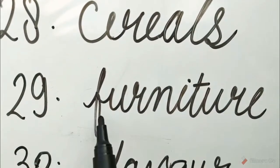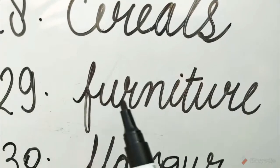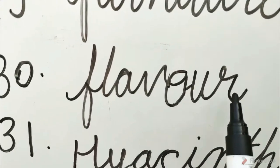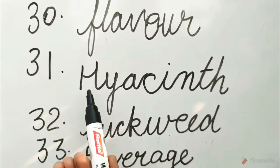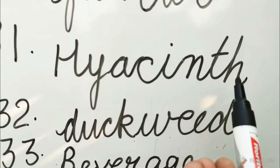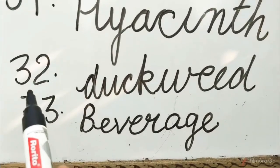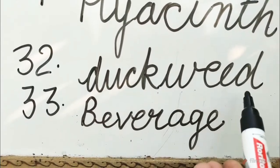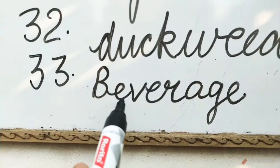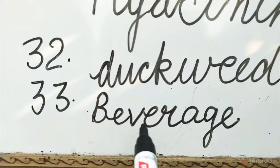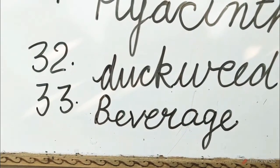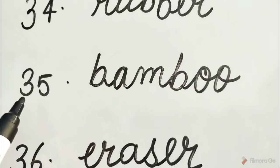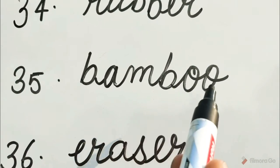Number 29: F-U-R-N-I-T-U-R-E, furniture. Number 30: F-L-A-V-O-U-R, flavor. Number 31: H-Y-A-C-I-N-T-H, hyacinth. Number 32: D-U-C-K-W-E-E-D, duckweed. Number 33: B-E-V-E-R-A-G-E, beverage. Number 34: R-U-B-B-E-R, rubber. Number 35: B-A-M-B-O-O, bamboo.